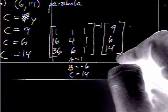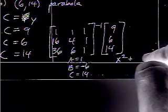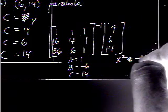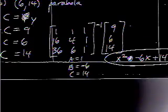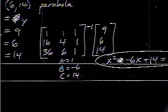So, we are looking at x squared minus 6x plus 14 equals y. That's the parabola we're dealing with.